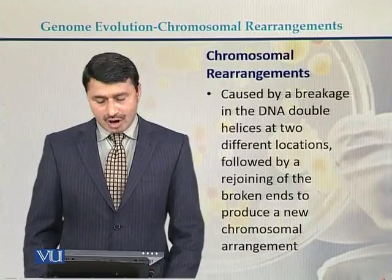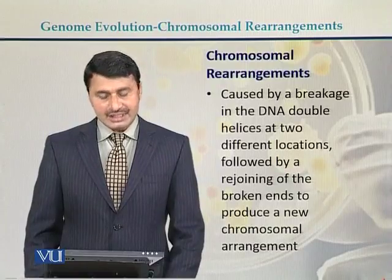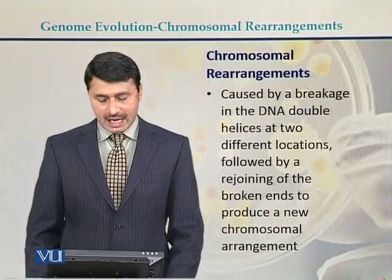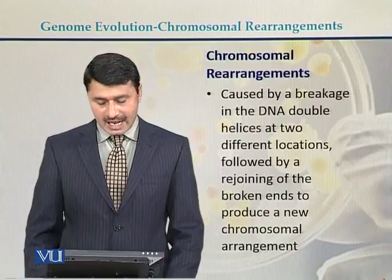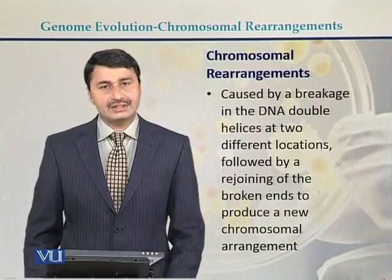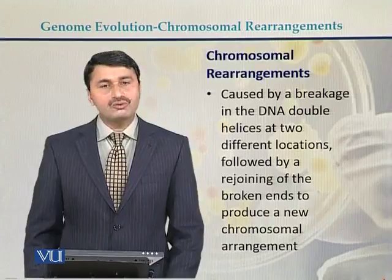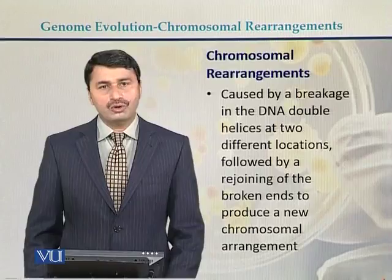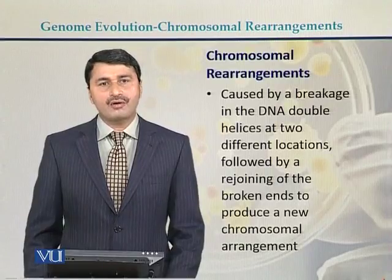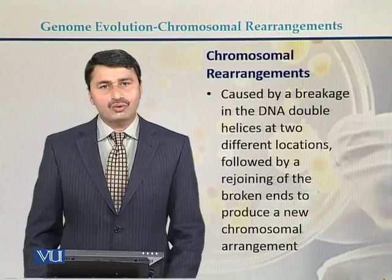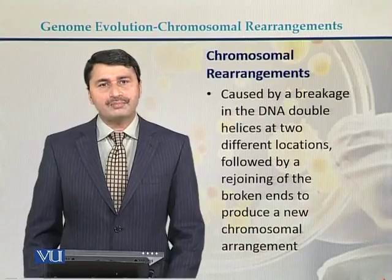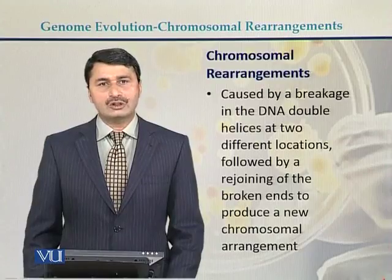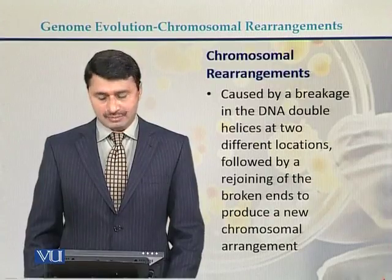Chromosomal rearrangements are caused by a breakage in a DNA double helix at two different locations, followed by a rejoining of the broken ends at different places, which produces a new chromosomal arrangement. Instead of joining the broken ends at the original position from where the DNA was broken, they join to different places, and that actually produces chromosomal rearrangements.